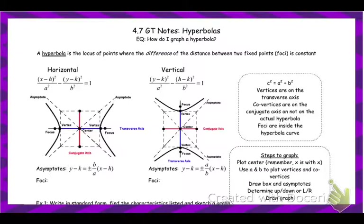Hi guys. Today is the last new thing for the semester. We're going to look at the last conic section, which is a hyperbola. A hyperbola is the locus of all points where the difference of the distances between two fixed points is constant. This is similar to an ellipse, except for an ellipse it was where the sum of the distances was the same.